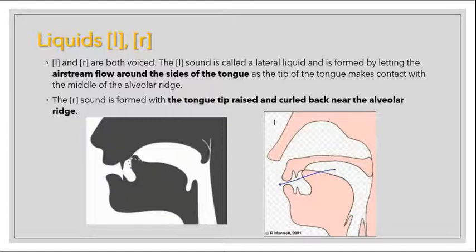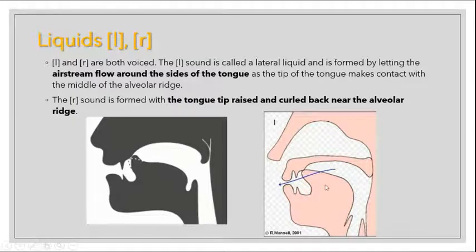Liquids: L and R are both voiced. The L sound is called a lateral liquid and is formed by letting the airstream flow through the sides of the tongue as the tip of the tongue makes contact with the middle of the alveolar ridge. That is the main way to explain the L sound.